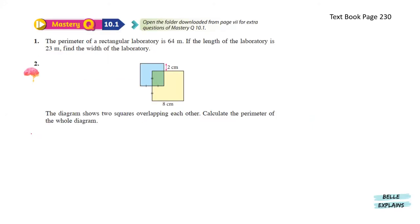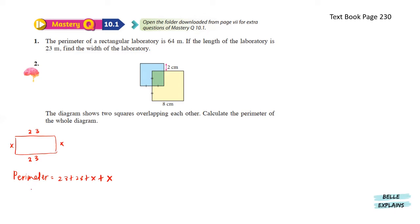Moving on to Mastery Q 10.1. The perimeter of the rectangular laboratory is 64 centimeters. If the length of the laboratory is 23 meters, find the width. Let's draw the rectangle out — the length is 23 here and 23 on the opposite side. Let's label the width with x. The perimeter is 64, so that gives us 64 equals to 46 plus 2x, giving us the value of x at 9 centimeters. So the width is 9 centimeters.